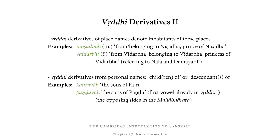Vṛddhi derivatives of place names refer to the inhabitants of those places. For example, in the story of Nala and Damayantī from the Mahābhārata, Nala is often referred to as Naiṣadha — the one from or belonging to Niṣadha — and Damayantī is often referred to as Vaidarbhī, the one from Vidarbha. Note that Naiṣadha is masculine because it refers to a man, and Vaidarbhī is feminine because it refers to a woman, namely Damayantī.